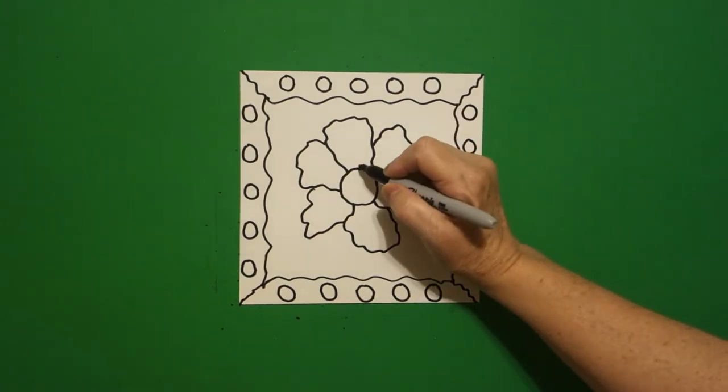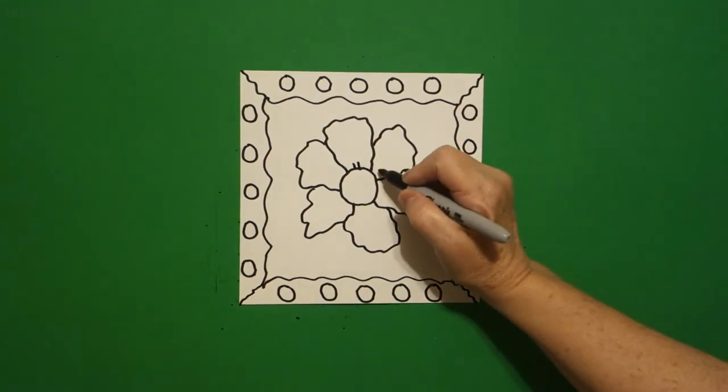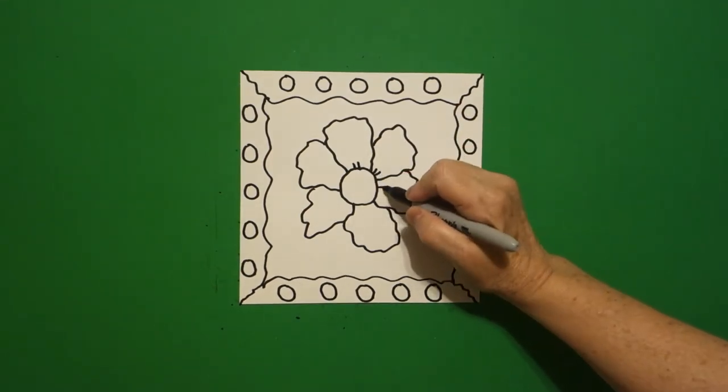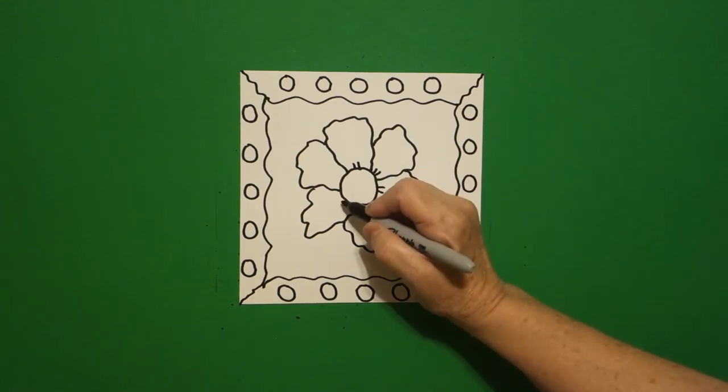Now, on each part of this circle, I'm going to put two straight lines inside each one of my spaces.